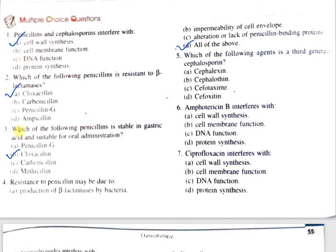Question number 5: Which of the following agents is a third generation cephalosporin? A, cephalexin; B, cephalothin; C, cefotaxime; D, cefoxitin. The correct option is C, cefotaxime.